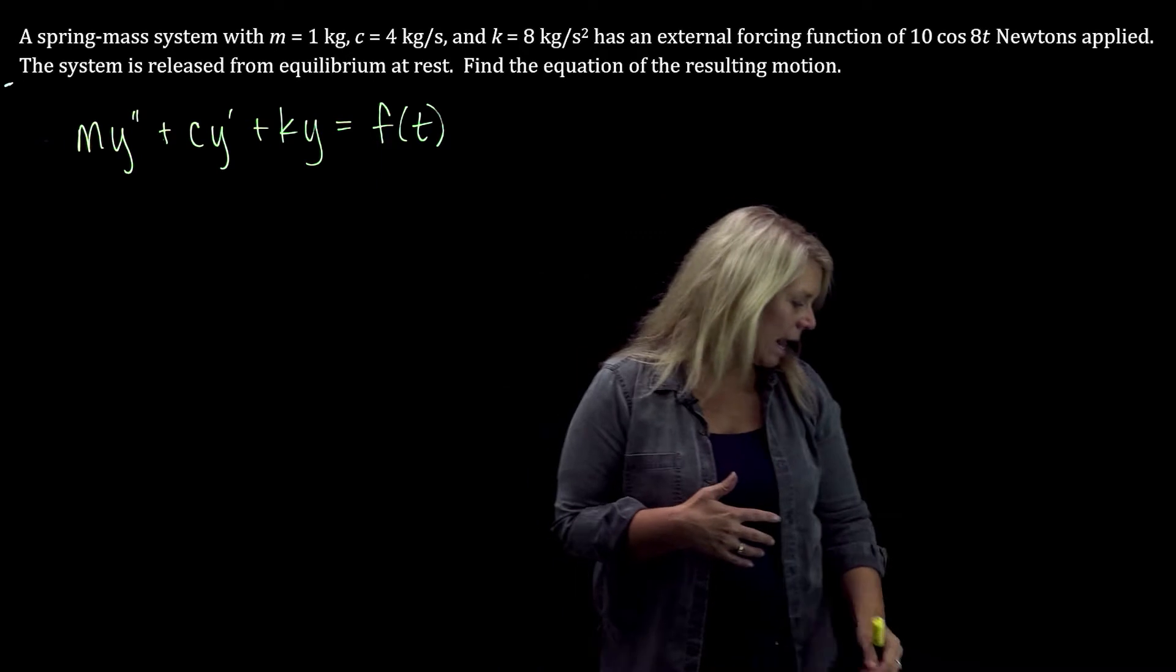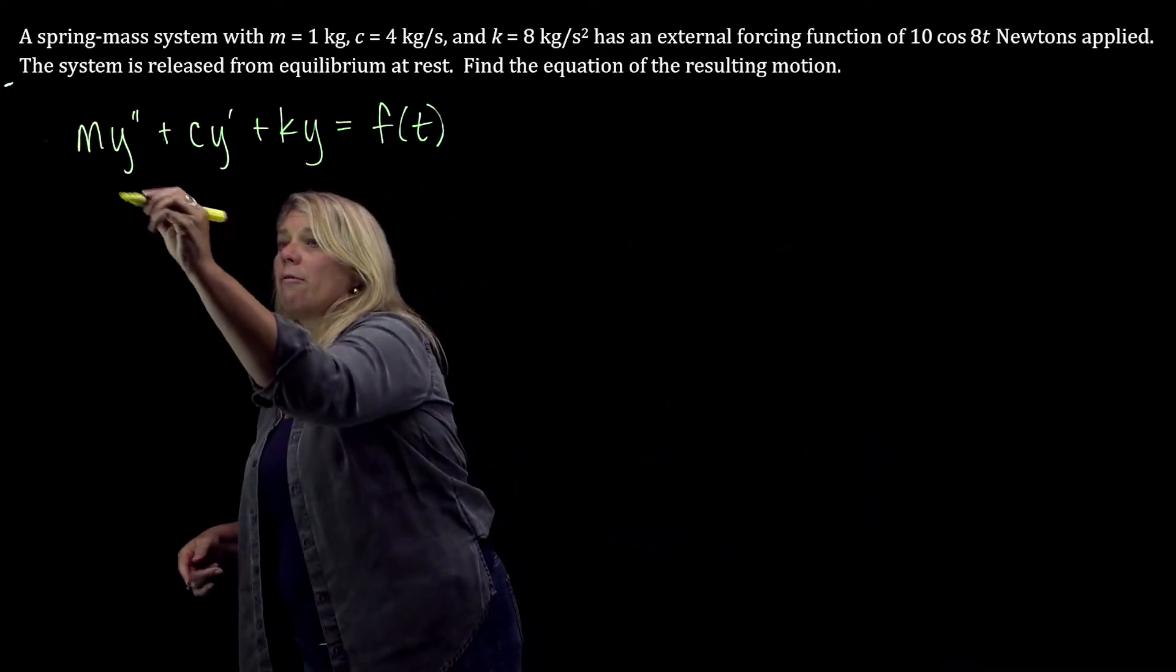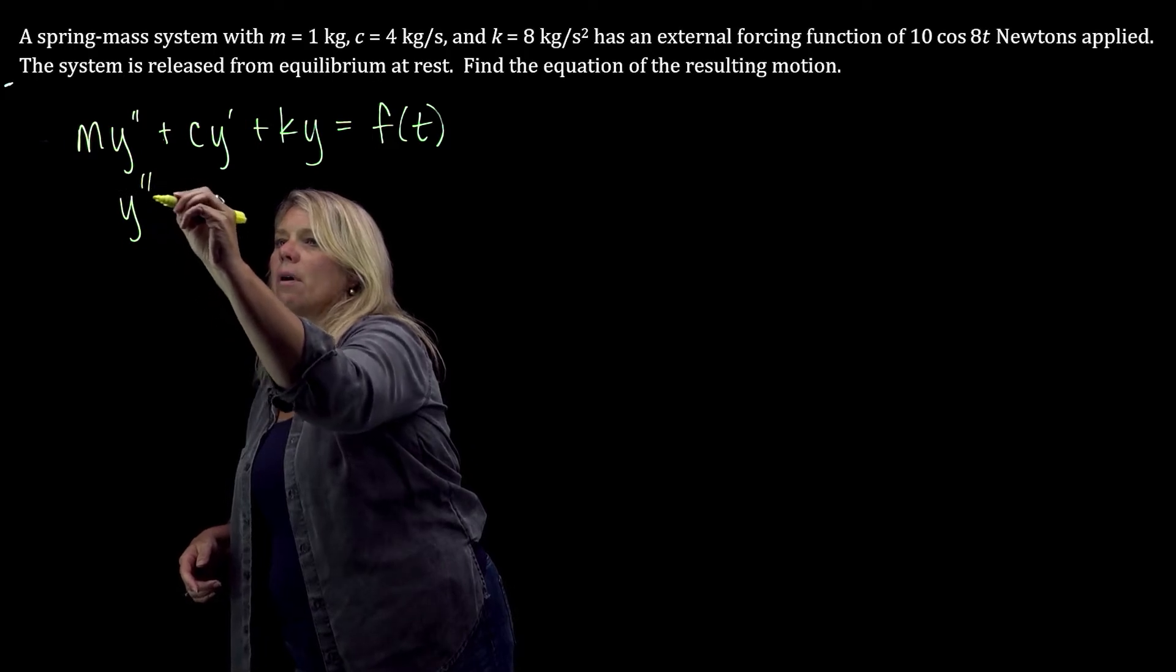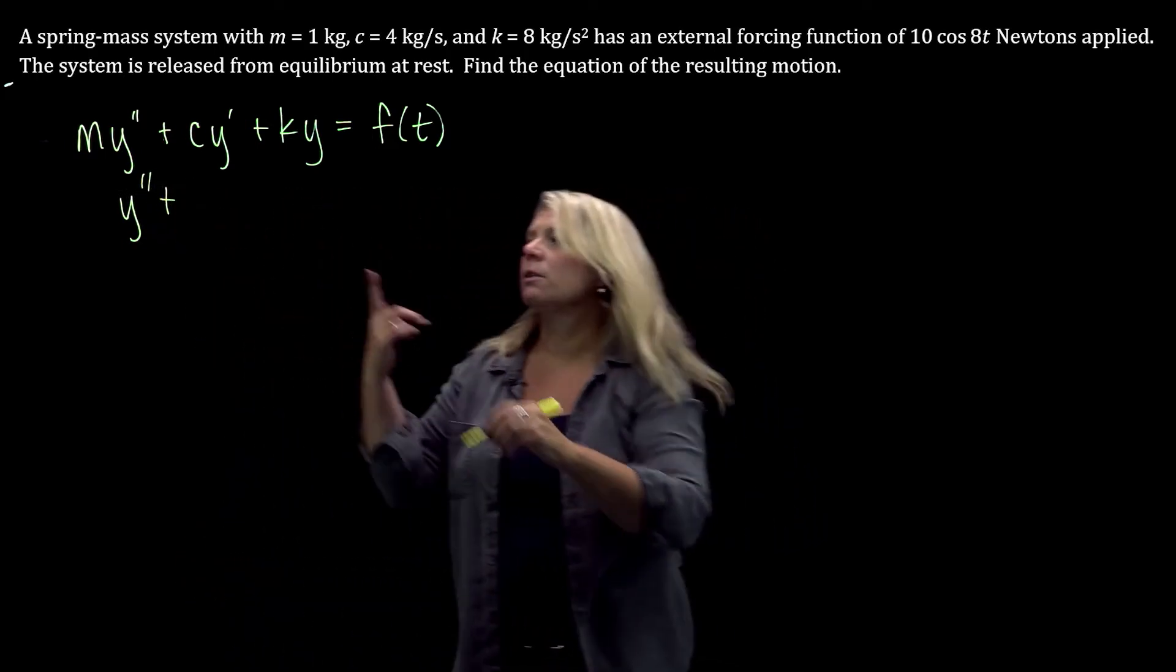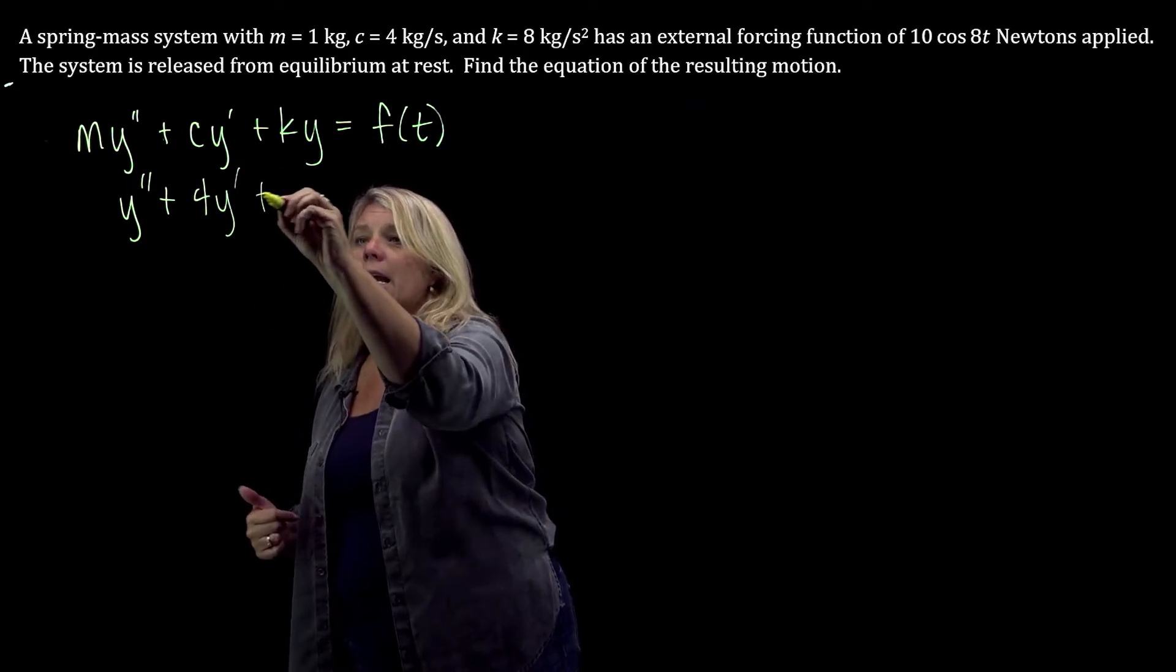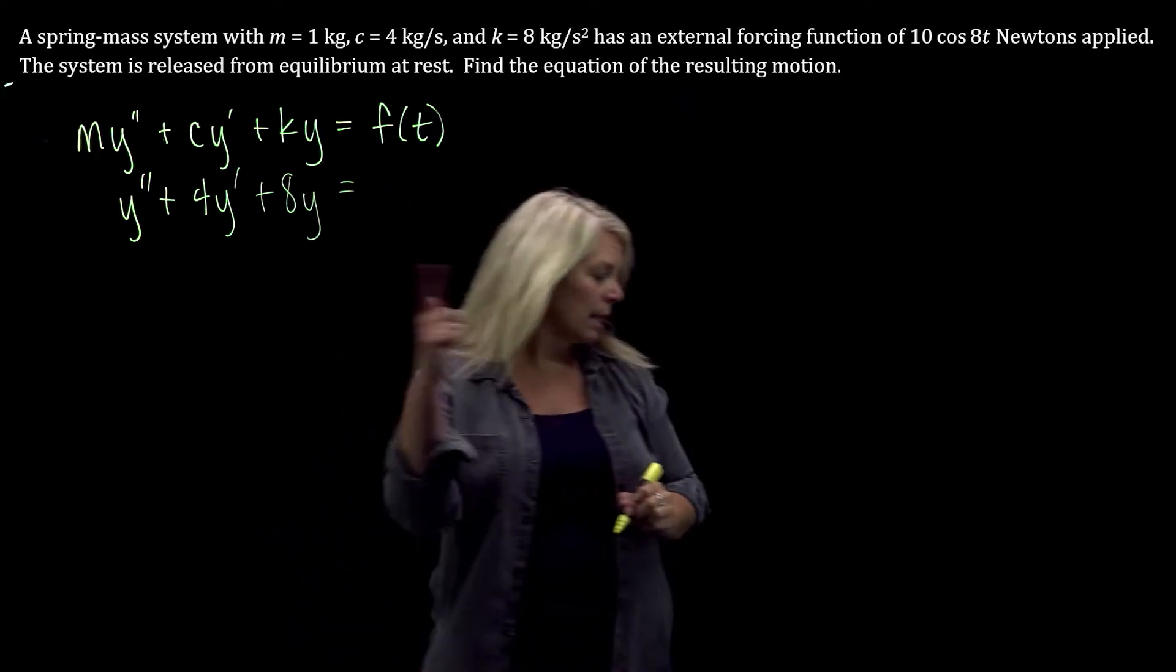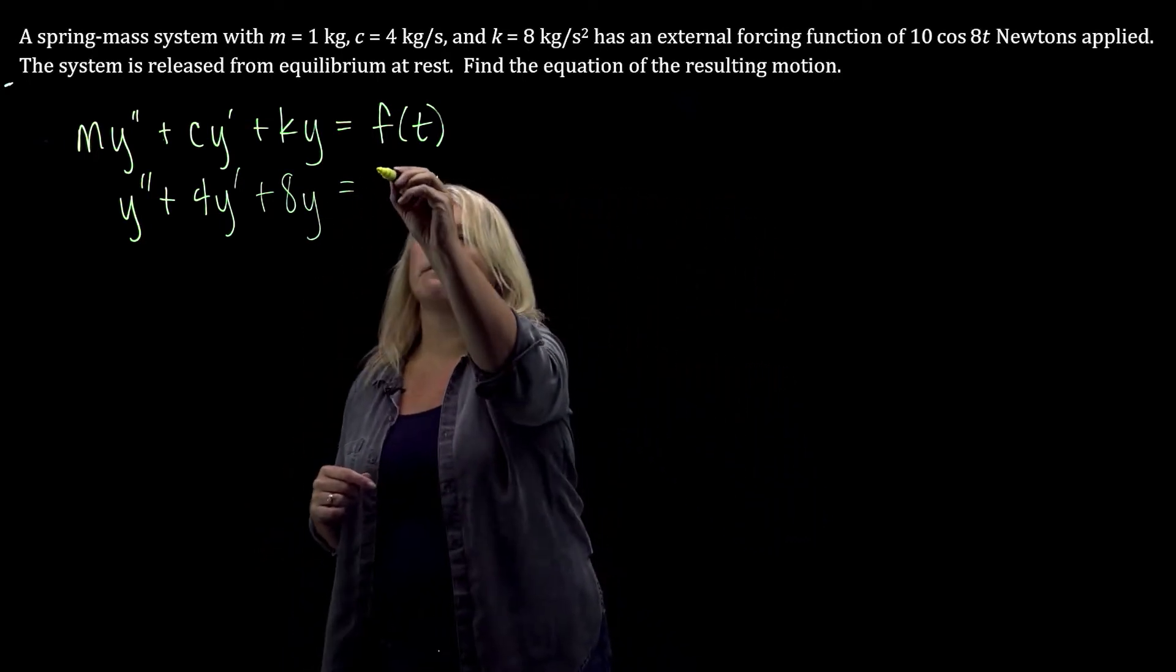Alright, let's go ahead and write down the differential equation. So our m is 1, so we'll have 1y'', and our c is 4, so we'll have 4y', and our k is 8, so plus 8y equals, and then our external forcing function, 10 cos 8t.